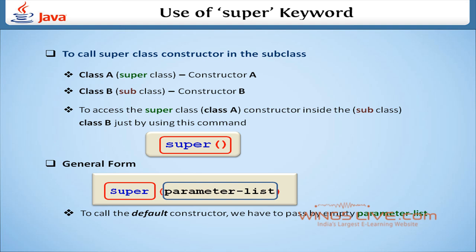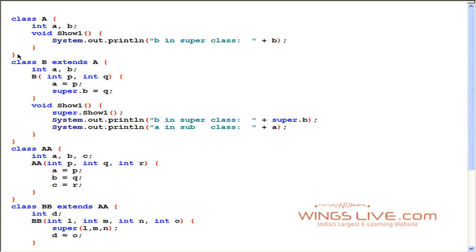Let us see an example illustrating the use of the keyword super to call variables and a constructor of a superclass. In this program, class A contains method show1, which prints the value of B in class A. Class B extends class A and contains a constructor with two integer parameters. The keyword super is assigned to variable B so that it automatically gets the value of class A and is assigned to variable Q. Inside method show1, we print the value of B using the keyword super and the value of the current class A.